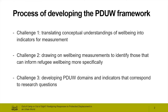The first challenge is translating conceptual understandings of wellbeing into indicators for measurement. The second challenge is drawing on wellbeing measurements to identify those that can inform refugee wellbeing specifically. And the third was developing domains and indicators that can inform the research project, realigning responses to protracted displacement in an urban world.